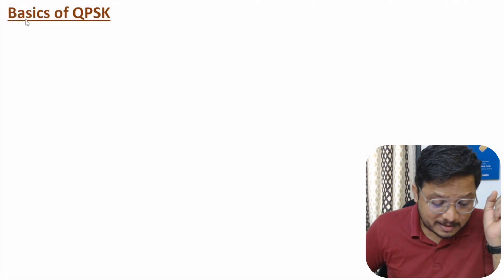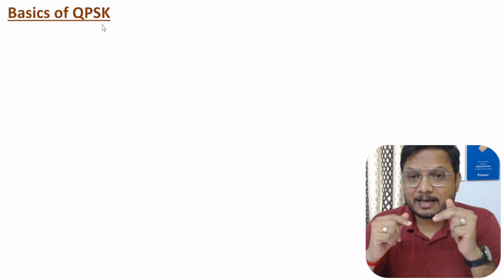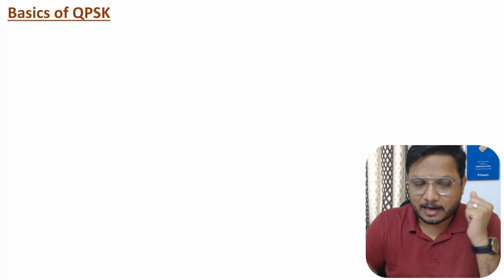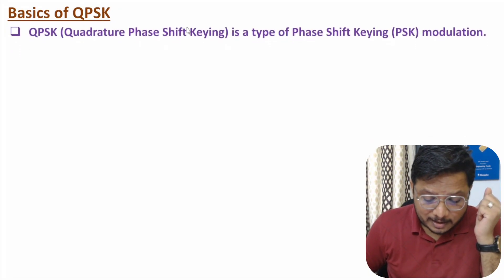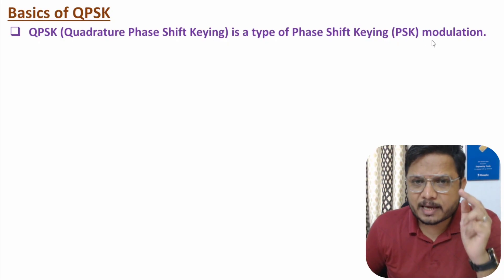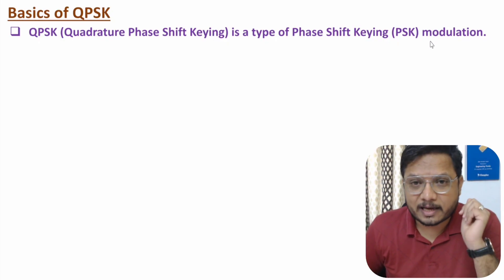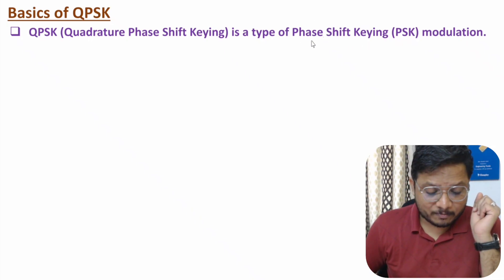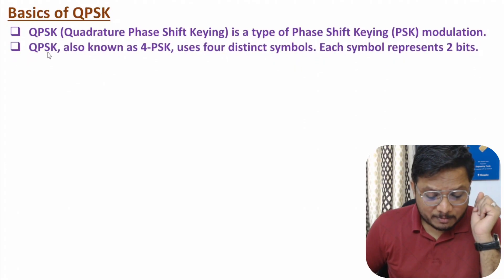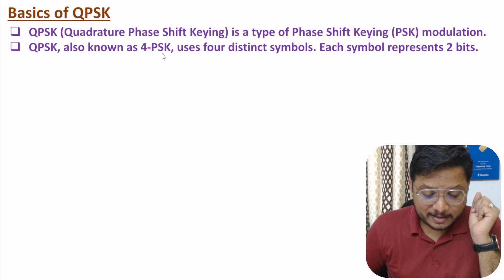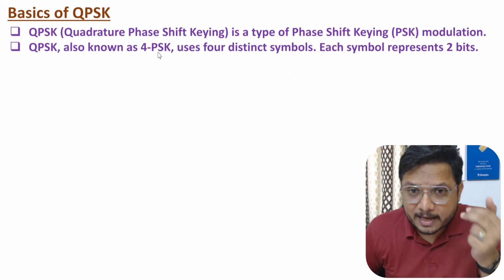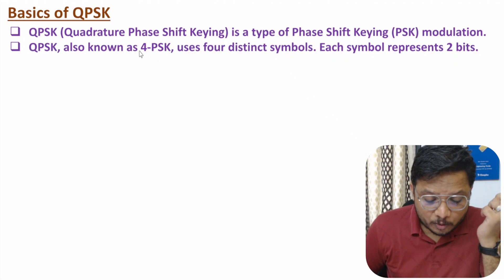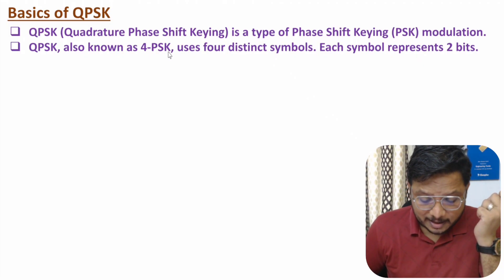Let us start with the basics of QPSK. QPSK is Quadrature Phase Shift Keying, which is a type of PSK modulation. PSK means Phase Shift Keying, where modulation occurs with respect to a change in the phase of the carrier. In QPSK we have phase shift keying, also known as 4PSK, because in QPSK we have a total of four symbols.